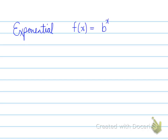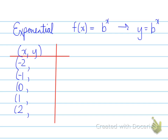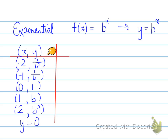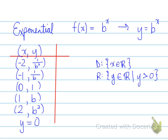Next step: exponential function. We're looking at the base b. Our basic table will have the same x values we've been using each time, but this time our y values will be 1 over b squared, 1 over b, 1, b, and b squared. Don't forget the horizontal asymptote. The domain is x belongs to real, and the range is y belongs to real, such that y is greater than 0.